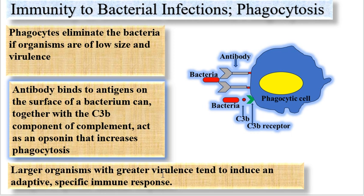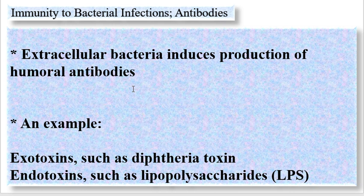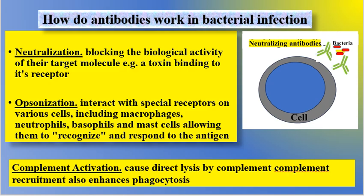Bacteria of large size with greater virulence tend to induce an adaptive and specific immune response. Extracellular bacteria induce production of humoral antibodies, and these antibodies are raised against products of the bacteria — for example, exotoxins like diphtheria toxin, and endotoxins such as lipopolysaccharides.